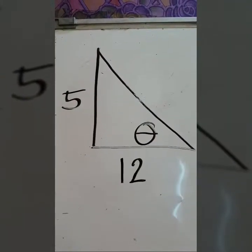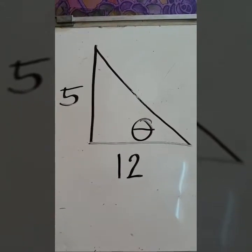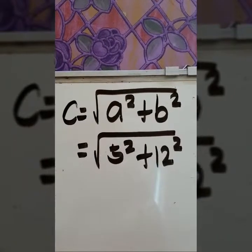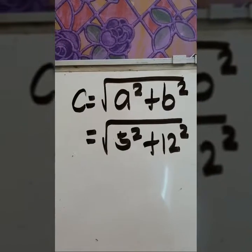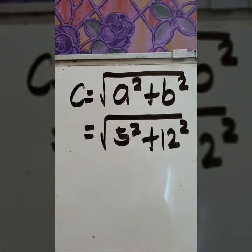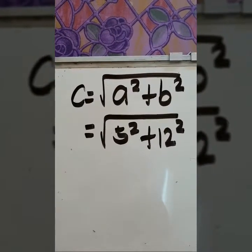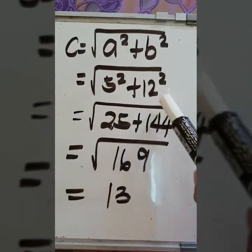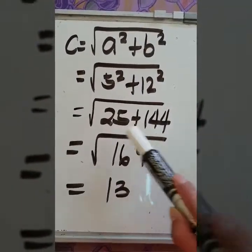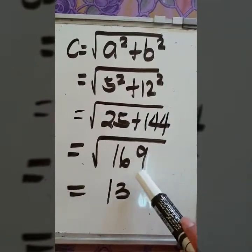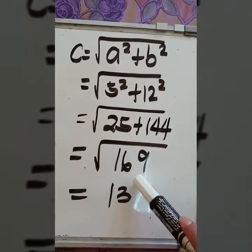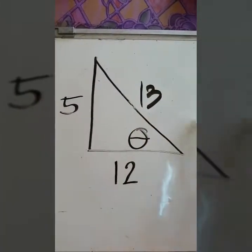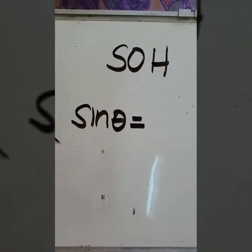For example number 1, the given sides are 5 and 12. Since we are looking for the hypotenuse, we are going to use the Pythagorean theorem. Applying the formula, c is equal to the square root of a squared plus b squared. So we have c equals the square root of 5 squared plus 12 squared. 5 squared is 25 and 12 squared is 144. Adding 25 and 144 gives 169, and the square root of 169 is 13. Therefore, the hypotenuse is equal to 13.